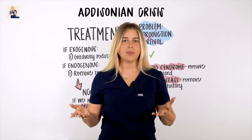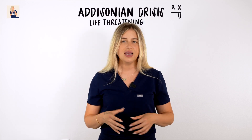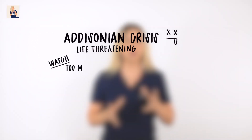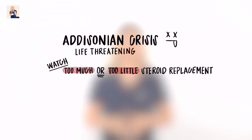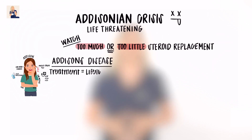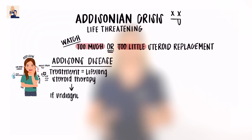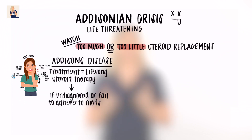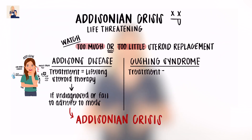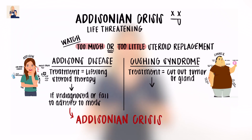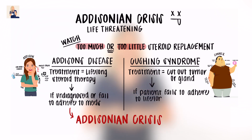What is Addisonian crisis? Steroid replacement can be touchy — it's incredibly important to watch for too much or too little steroid replacement by the patient, and this can happen in both conditions. Our main source of treatment for Addison's is lifelong steroid treatment. If the patient fails to adhere to this plan or Addison's disease goes undiagnosed, patients are at increased risk of Addisonian crisis. In the same way, if we cut out the adrenal or pituitary gland from Cushing's patients, we're completely stopping cortisol production, so these patients also need lifelong steroid therapy or they risk entering Addisonian crisis too.